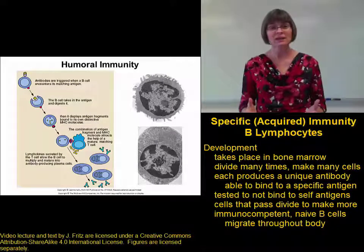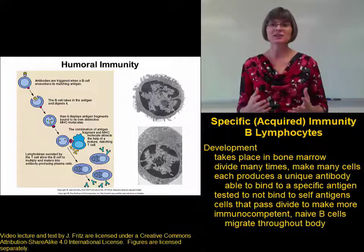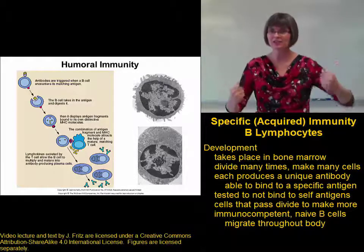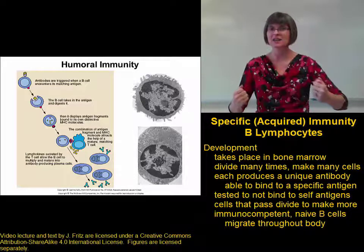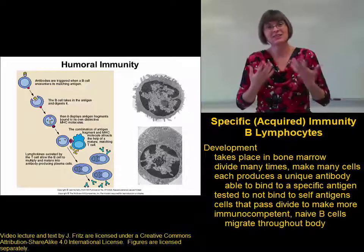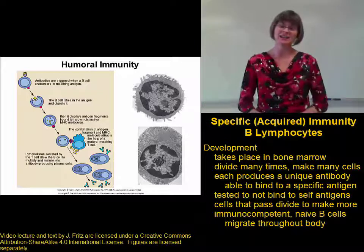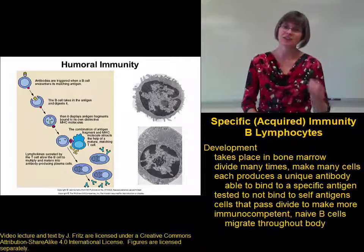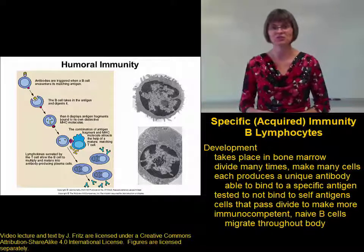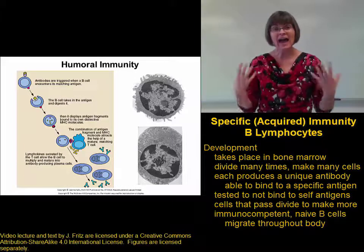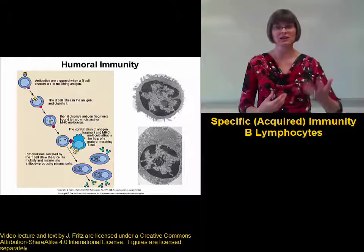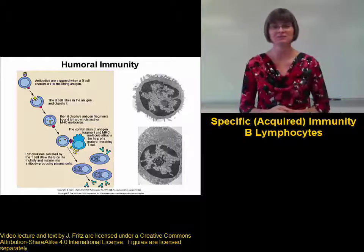At this point, the B cells are immunocompetent, which means they're ready to respond, but they're naive, meaning they're not activated yet. So they're not actually going to fight pathogens. We have to activate a B cell before it can fight a pathogen.